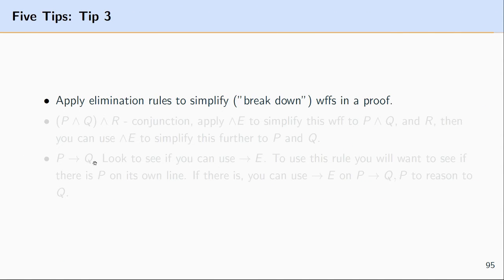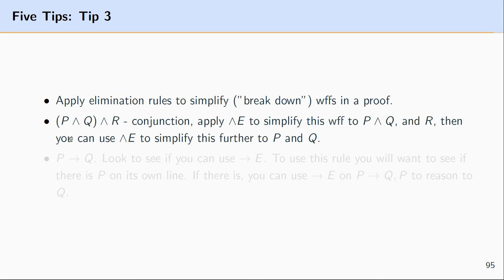Tip three: apply elimination rules to break down well-formed formulas in a proof. If you have two or three premises and aren't sure where to start, try breaking the formulas down to reduce their complexity. For example, given P∧Q∧R, identify it as a conjunction and apply conjunction elimination. You can derive P∧Q and R, then apply conjunction elimination again on P∧Q to get P and Q on separate lines.